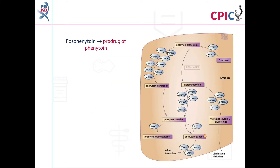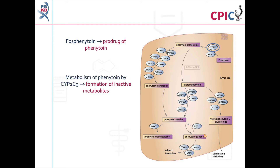This is the PharmGKB phenytoin pharmacokinetics pathway. A link to the pathway is provided in the description below this video. Phenytoin and fosphenytoin are anti-epileptic drugs. Fosphenytoin is a pro-drug of phenytoin and is covered by the same recommendations as phenytoin in this guideline.